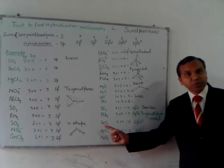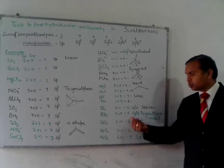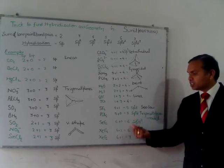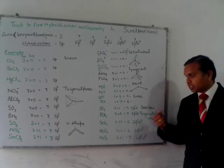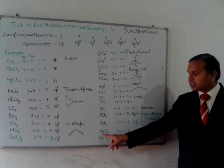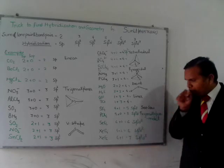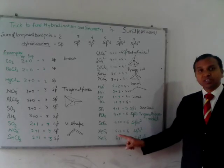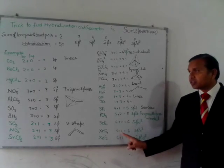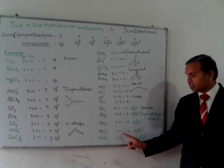Here SF6 - 6 bond pairs, we don't have any lone pair of electron, so the total sum is 6 and the hybridization is found to be sp3d2.